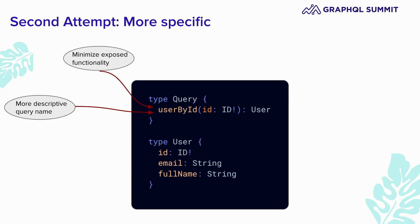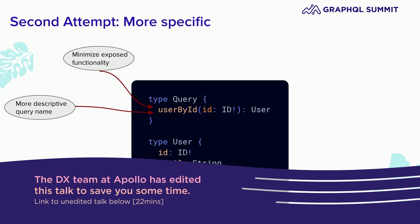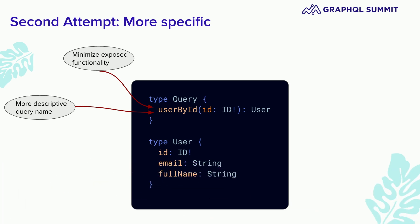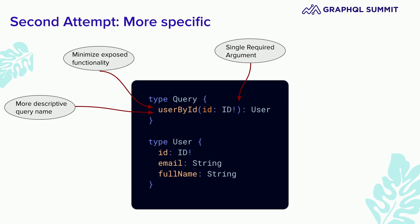The other thing is we're actually minimizing the exposed functionality here. In our initial use case, we weren't quite sure which fields — username or email — we were going to need to use to look up a user. But based on what clients are telling us, they don't need that, so we don't need to add it to our graph. We've also been able to make the parameter required — since we have a single requirement, it wouldn't make sense not to pass an ID called user ID.